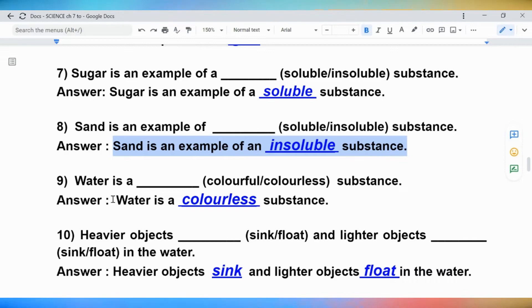Question 9: Water is a blank (colorful/colorless) substance. Answer: Water is a colorless substance.